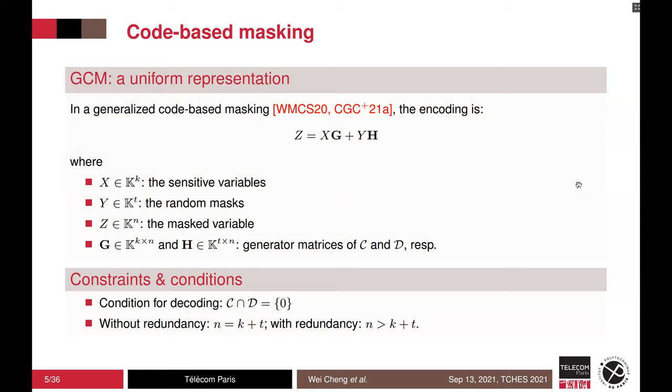The Boolean masking can be generalized into code-based masking from a coding theoretical perspective. Let Z equal to XG plus YH, where X has k pieces of information, Y has t masks and doesn't be encoded into Z with n shares. G and H are generator matrices of linear code C and D, respectively. The only condition in generalized code-based masking is that C∩D^⊥ has only zero codeword in the intersection. In addition, if n equals k plus t, there is no redundancy like in IPM and direct sum masking. Otherwise, if n is greater than k plus t, the masking is redundant.